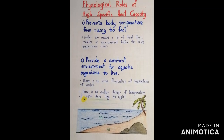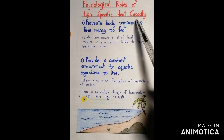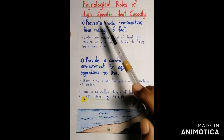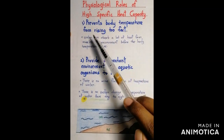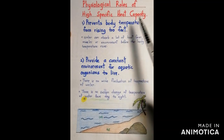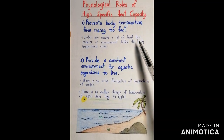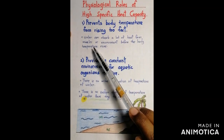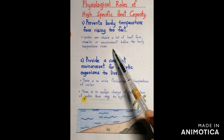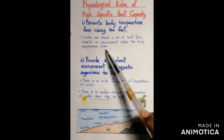The physiological role of high specific heat capacity is that it prevents body temperature from rising too fast. Water can absorb a lot of heat from muscles or the environment before the body temperature rises.